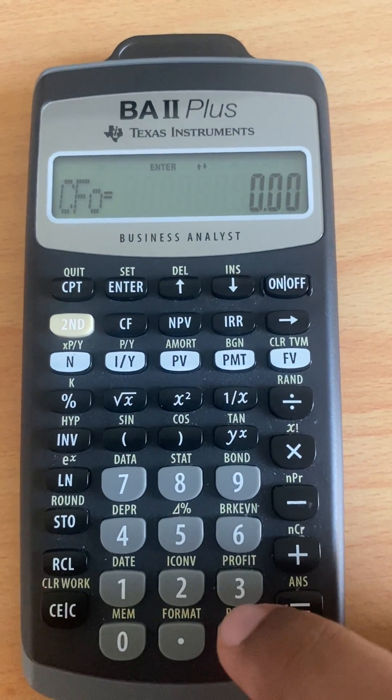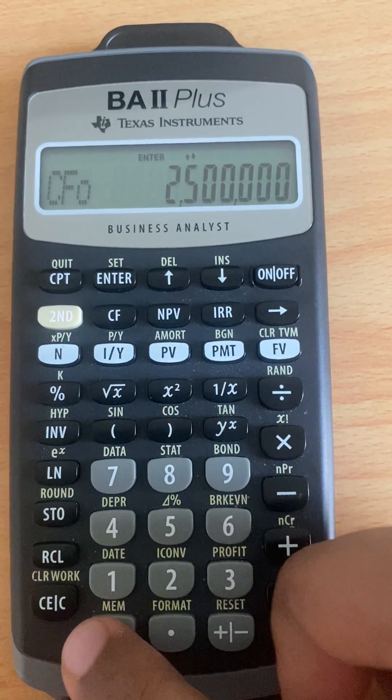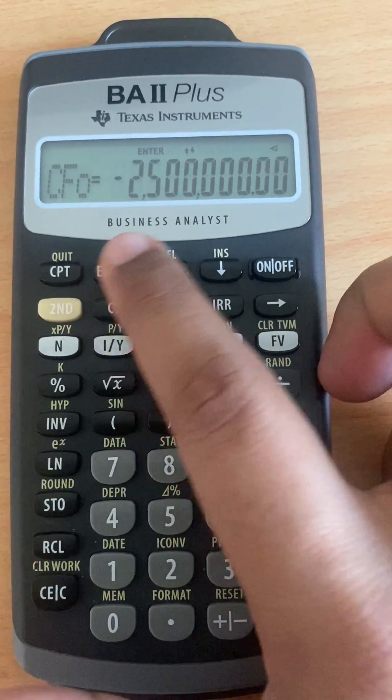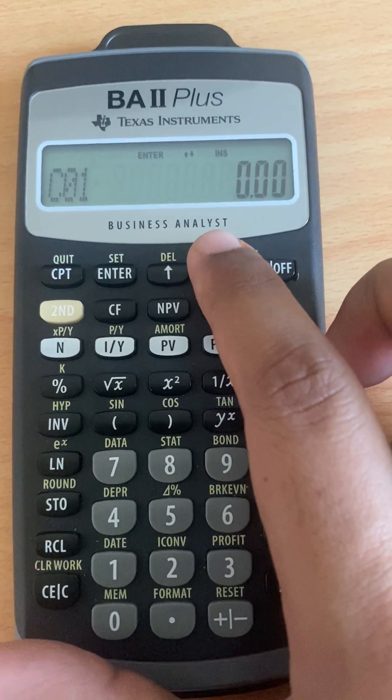So when we see here, the initial cost is 2.5 million. Then we press negative because it's outflow, so then we press enter. The CF0 is 0.